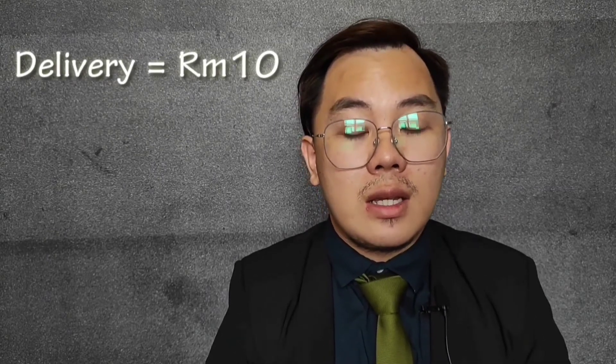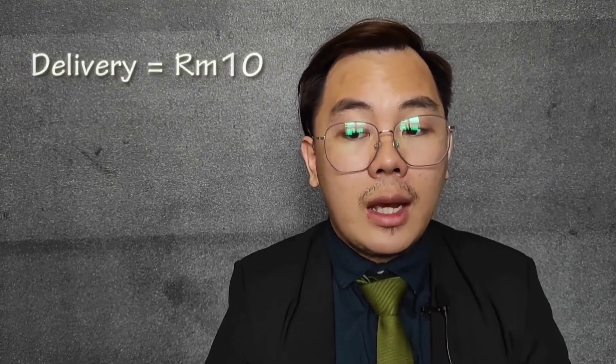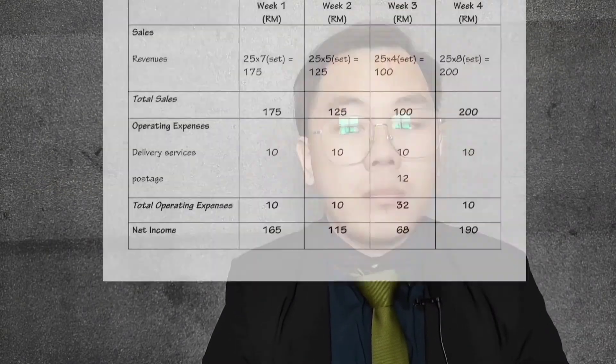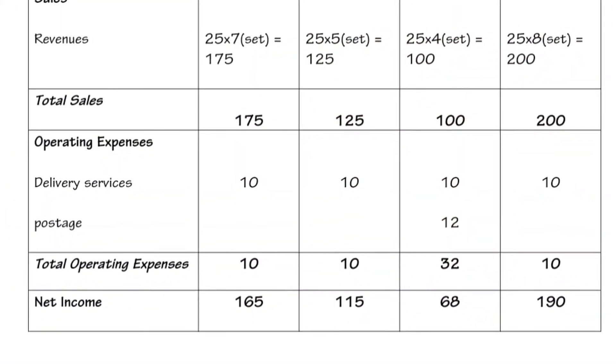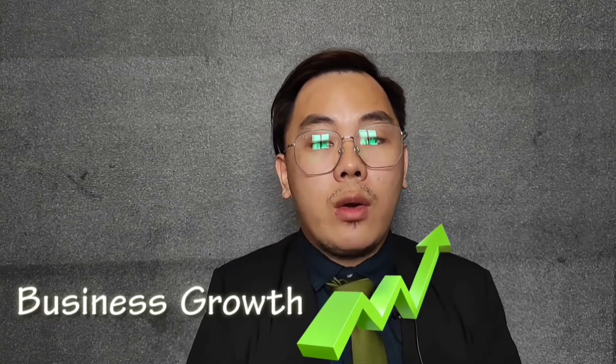For operating expenses, we don't use a lot. The delivery service is maintained at 10 ringgit per week. We also spent extra on postage, which costs 12 ringgit, making total operating expenses 32 ringgit for that week. The net income we gained for week 1 is 165 ringgit, week 2 is 115 ringgit, week 3 is 68 ringgit, and week 4 is 190 ringgit.